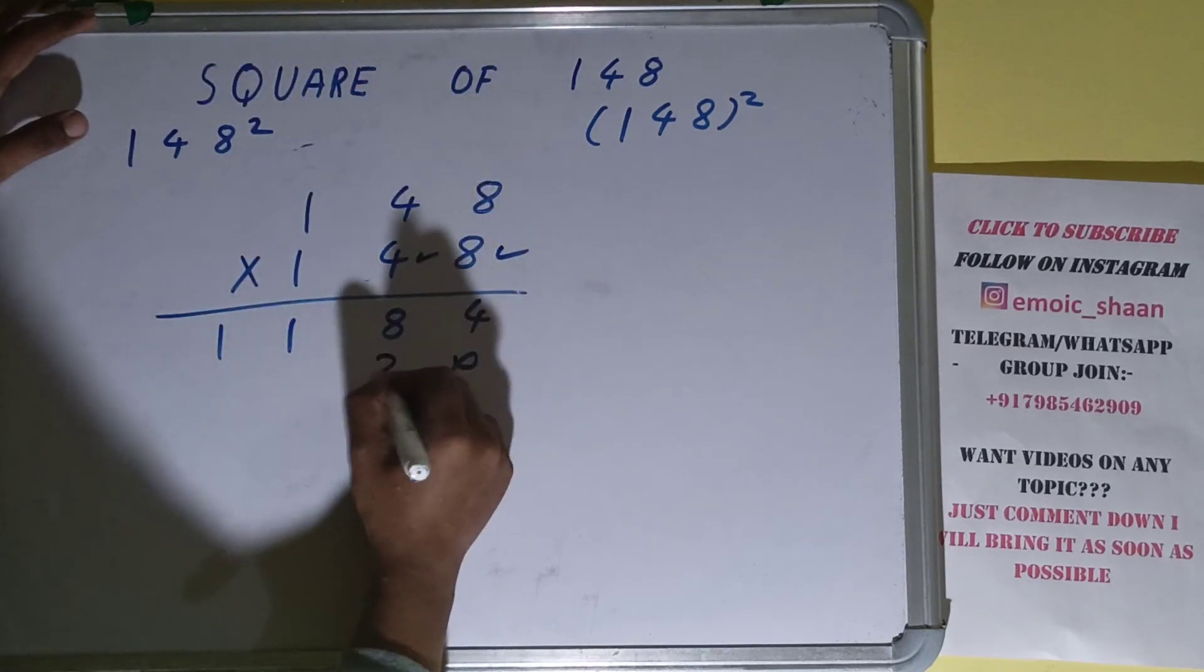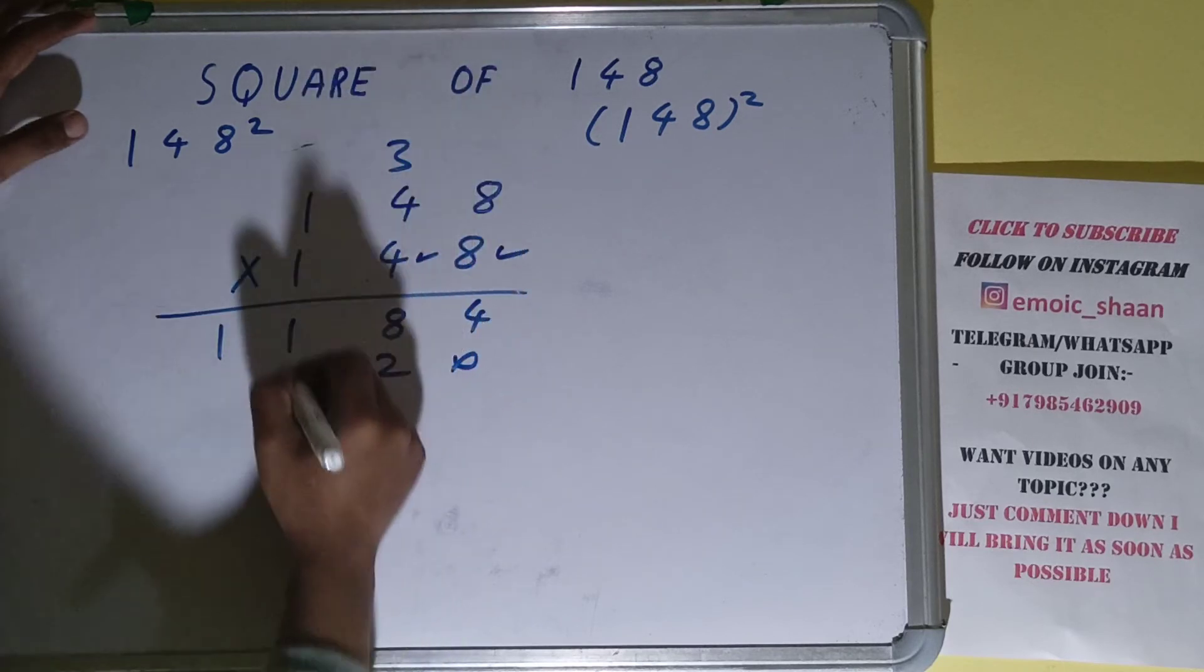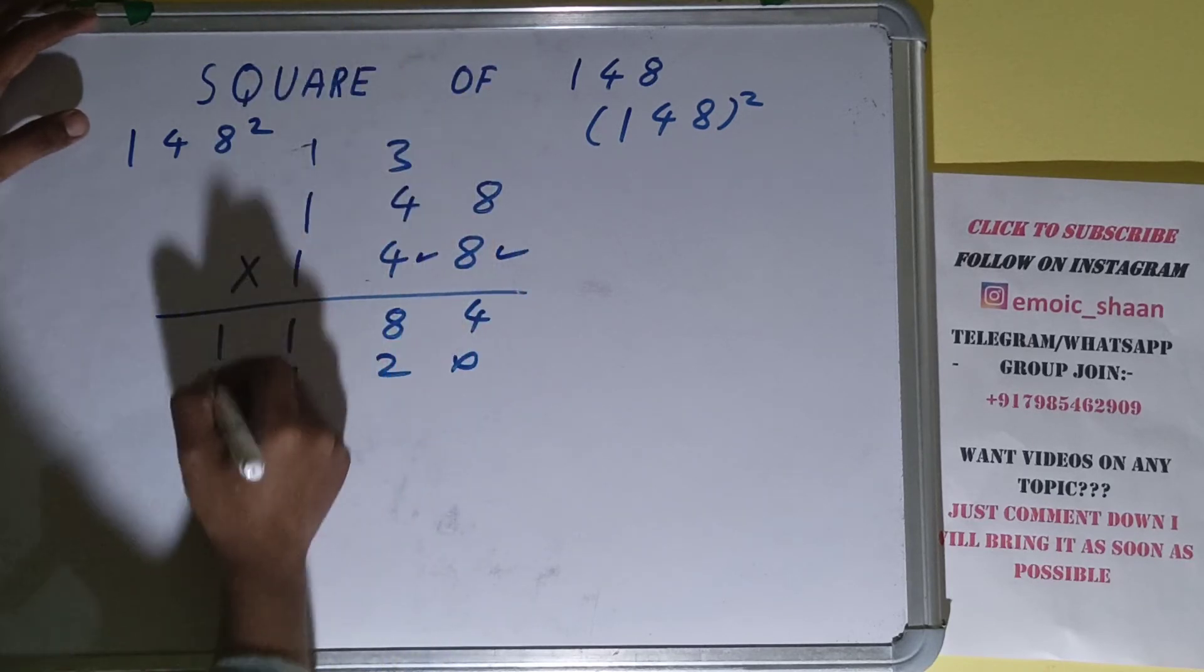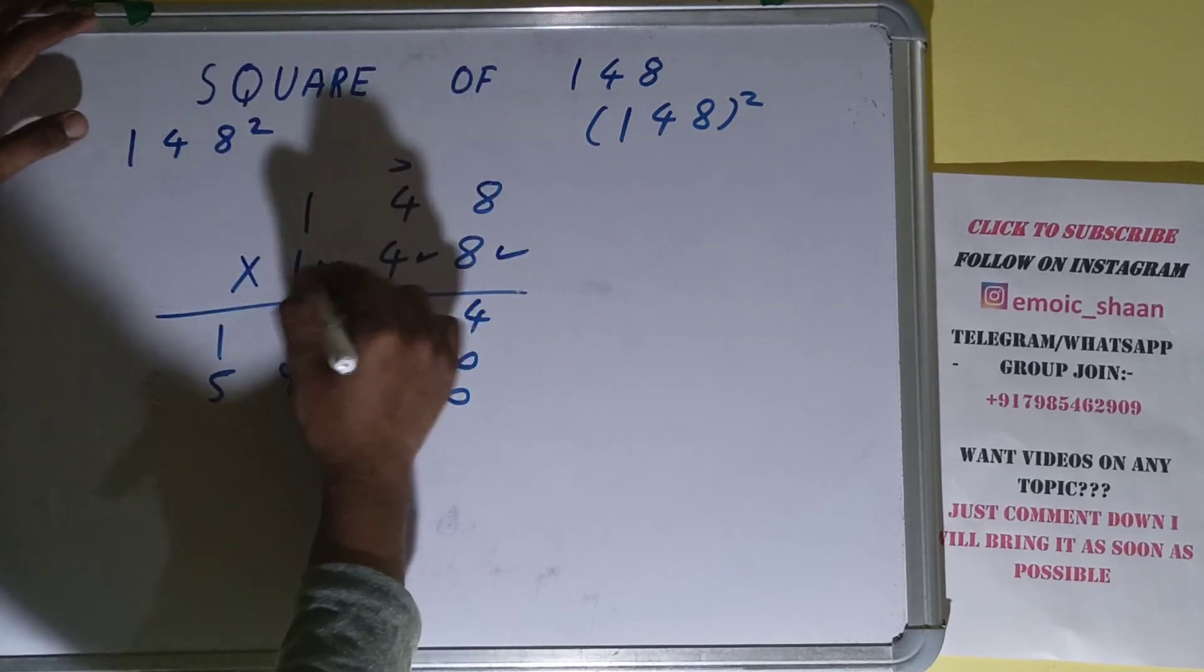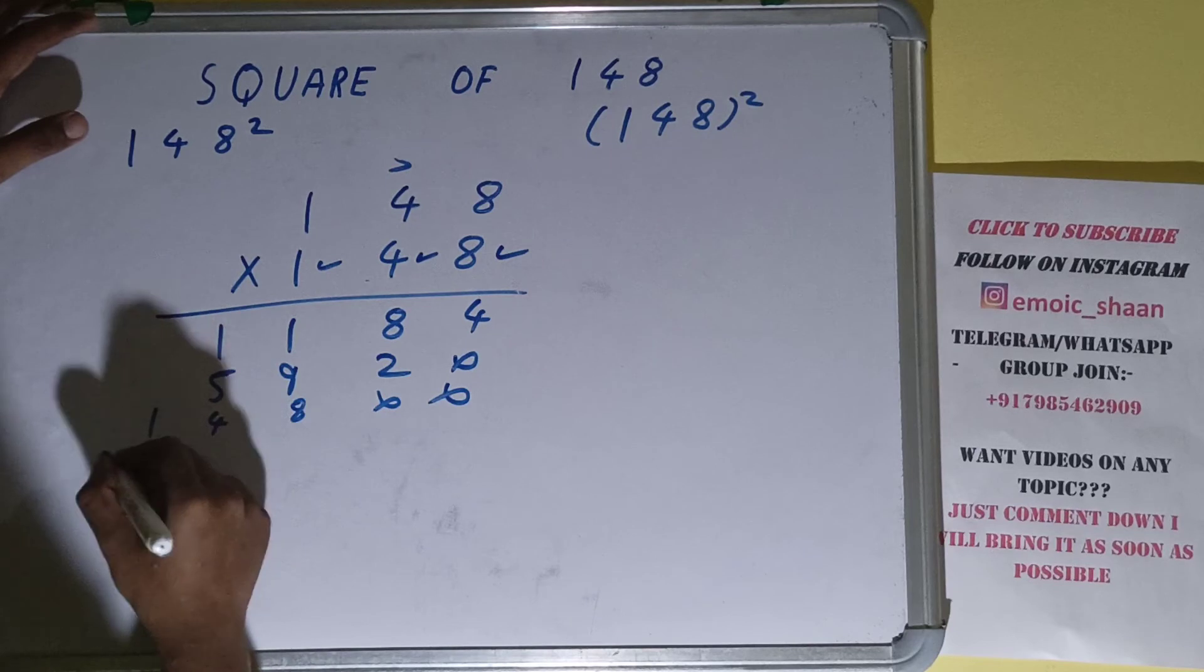Now this 4: 4×8 is 32, 2 down, 3 carry. 4×4 is 16 plus 3 equals 19, 9 down, 1 carry. 4×1 is 4 plus 1 equals 5. Then this 1: 1×8 is 8, 1×4 is 4, 1×1 is 1.